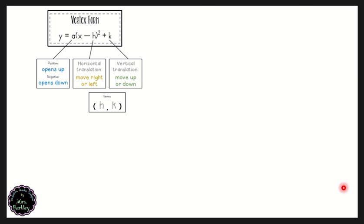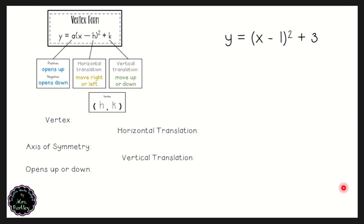Given the equation y equals the quantity x minus one, squared, plus three, we identify the vertex, axis of symmetry, whether it opens up or down, the horizontal and vertical translations, and then sketch a graph. The vertex is at the point (h, k): our h value is one and our k value is three, so the vertex is at (1, 3). The axis of symmetry is always the x value of our vertex — that's where the vertex splits the parabola in half — so the axis of symmetry is x equals one.